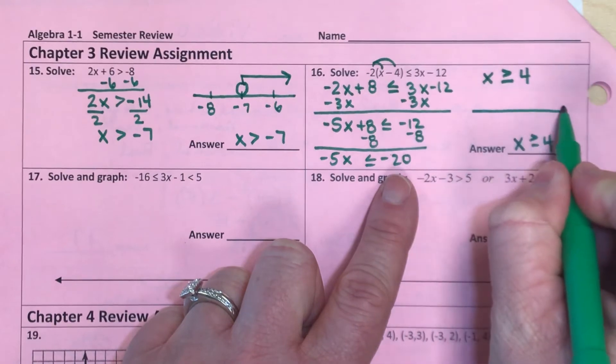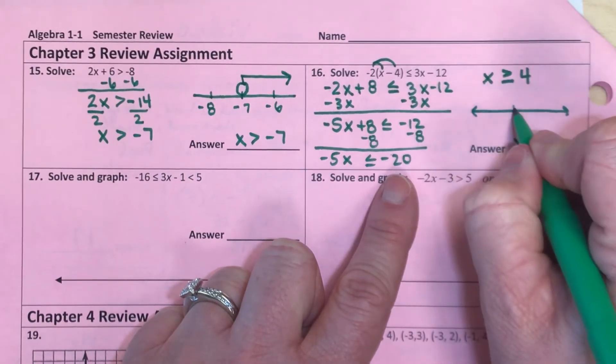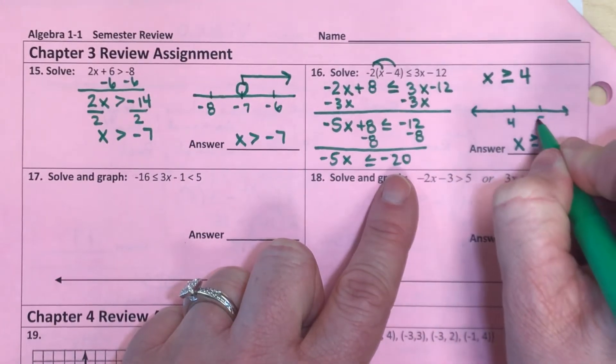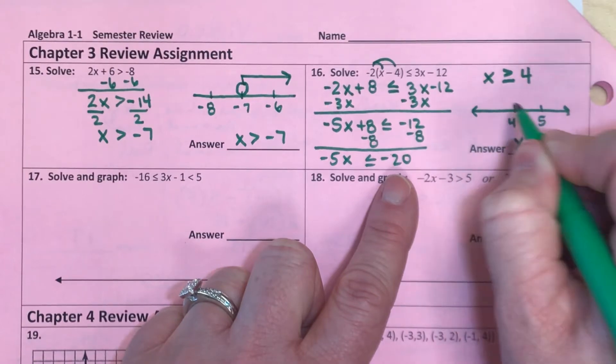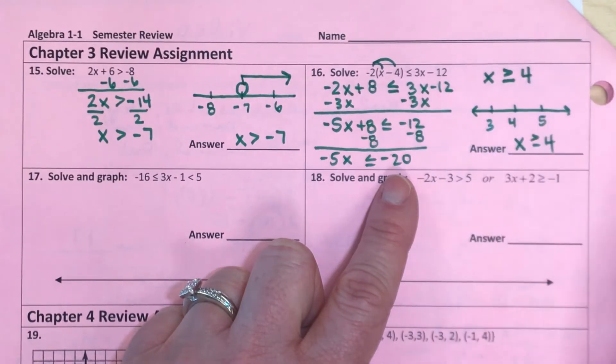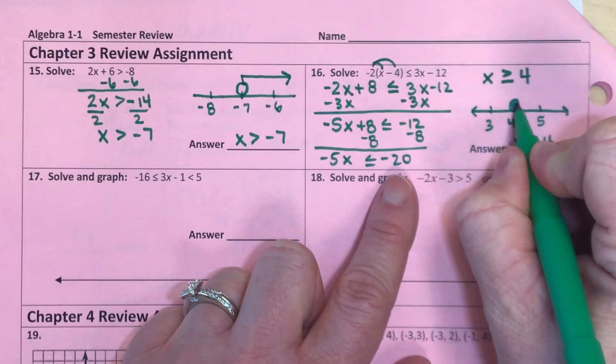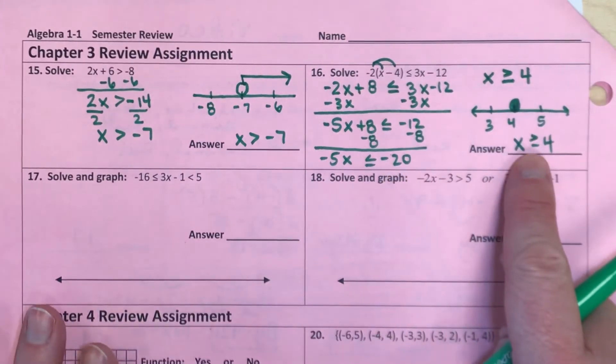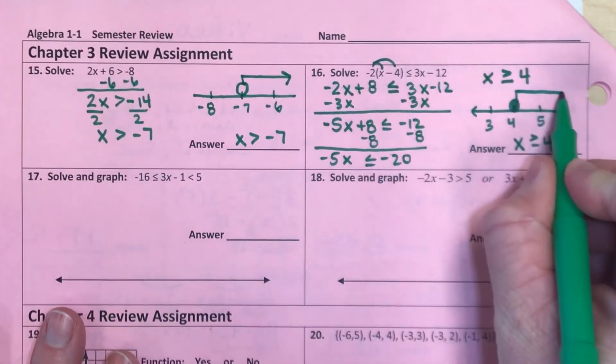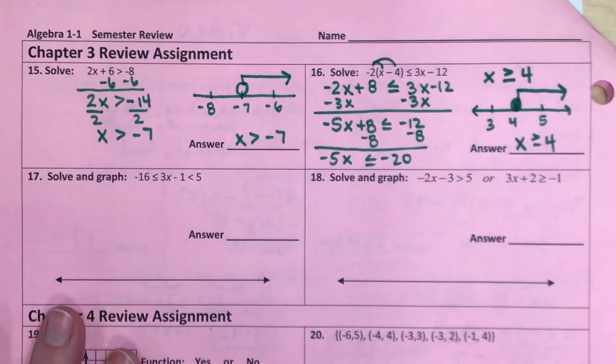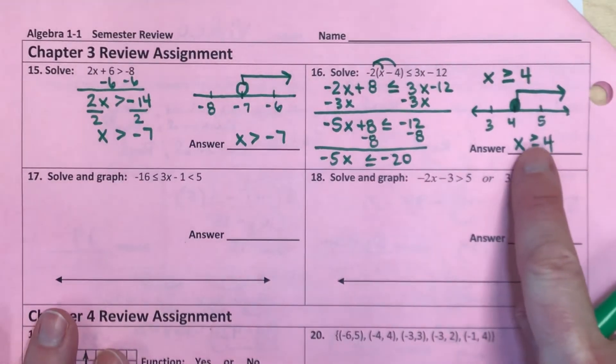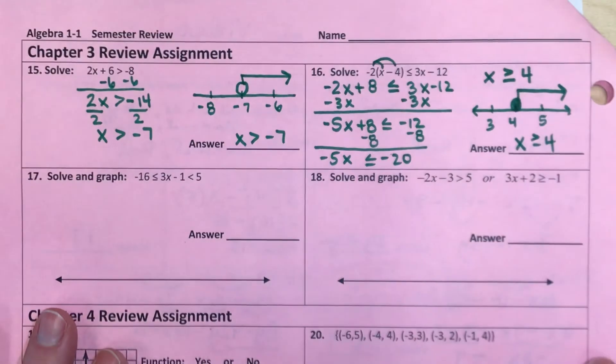And for my graph on the number line, I'm going to put 4 in the middle and a couple other numbers for reference. So a number larger to the right, a number smaller to the left. I'm going to circle 4 in this case and shade it in because this says equal to. And again, on this one, we're actually going to shade to the right as well. Because my arrow says to the right, but x is greater than, numbers greater than are also to the right.